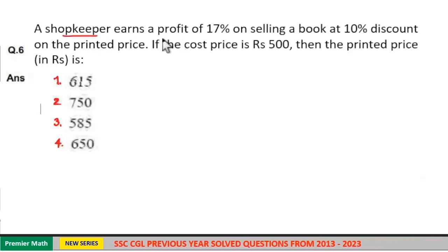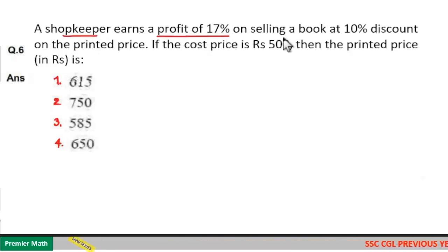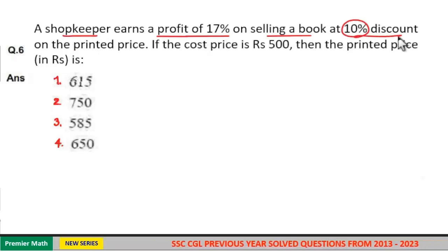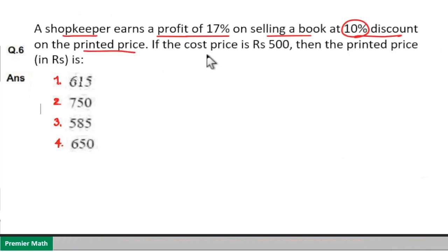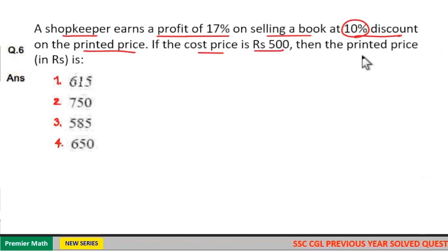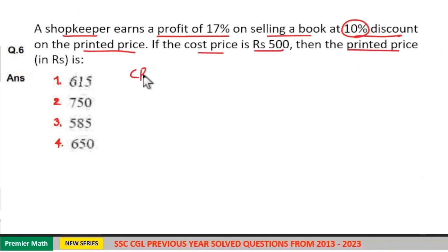A shopkeeper earns a profit of 17% on selling a book at 10% discount on the printed price. The cost price is ₹500.